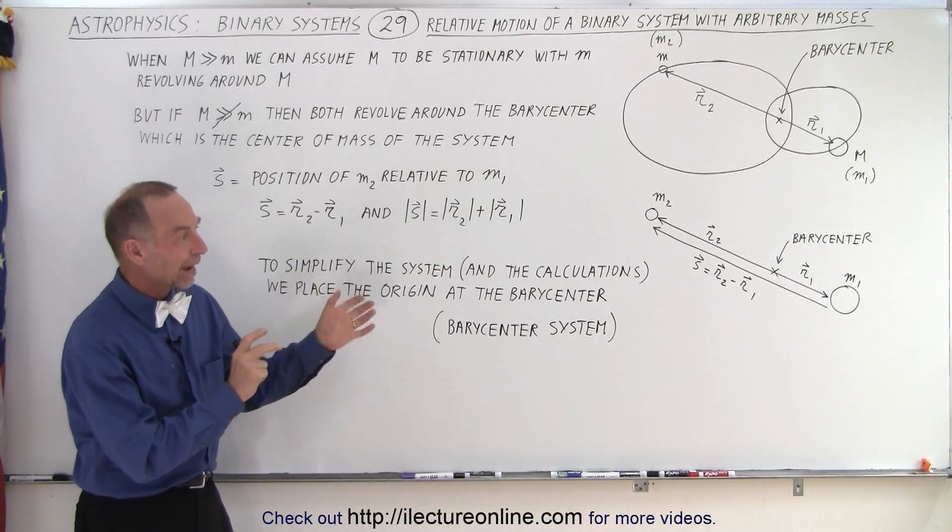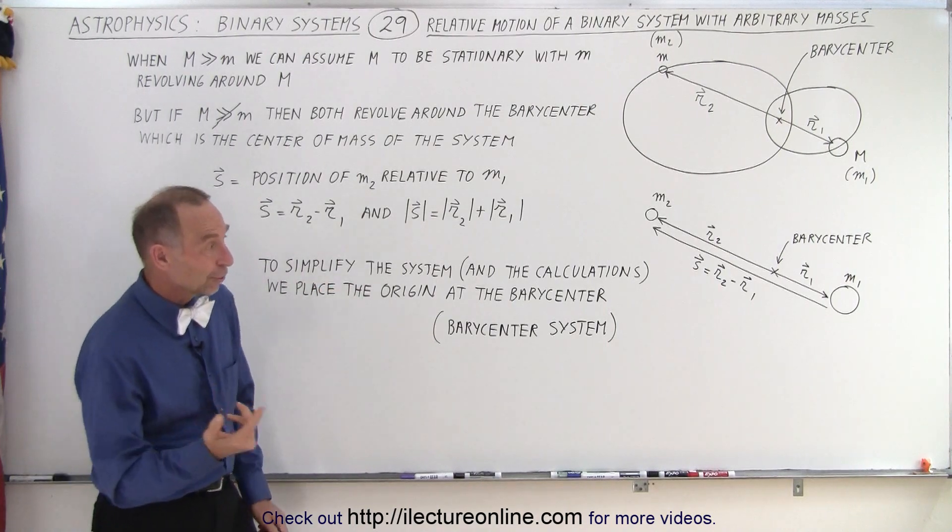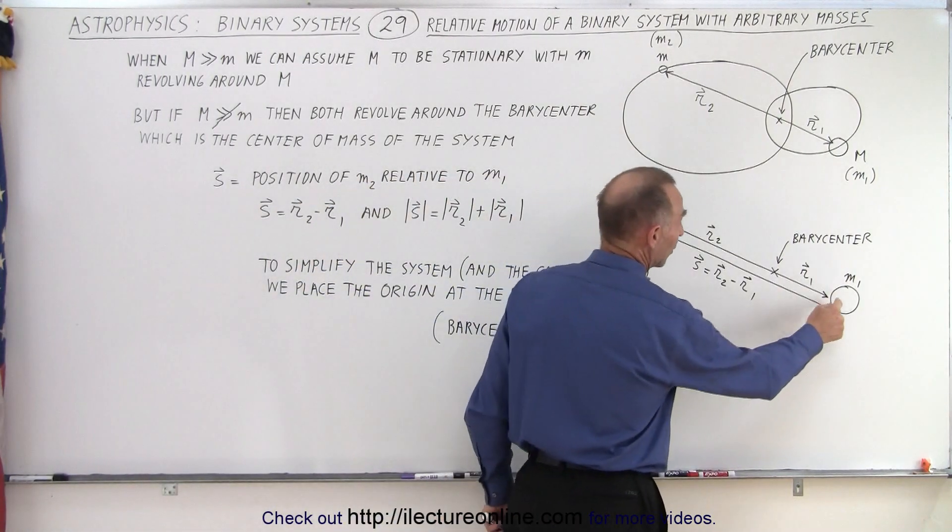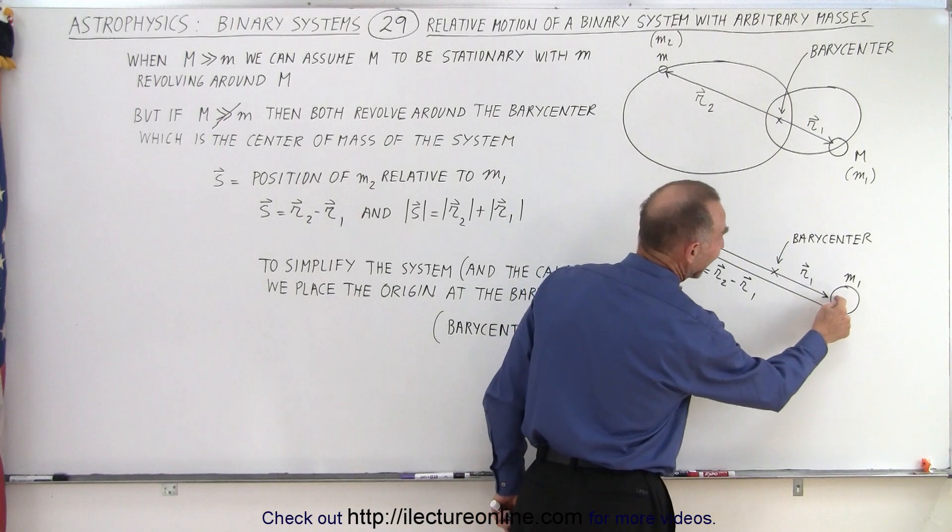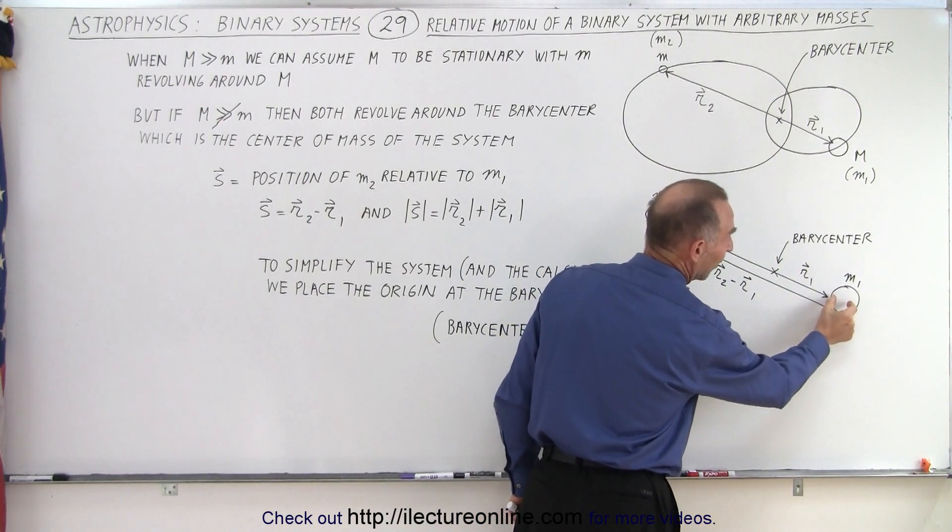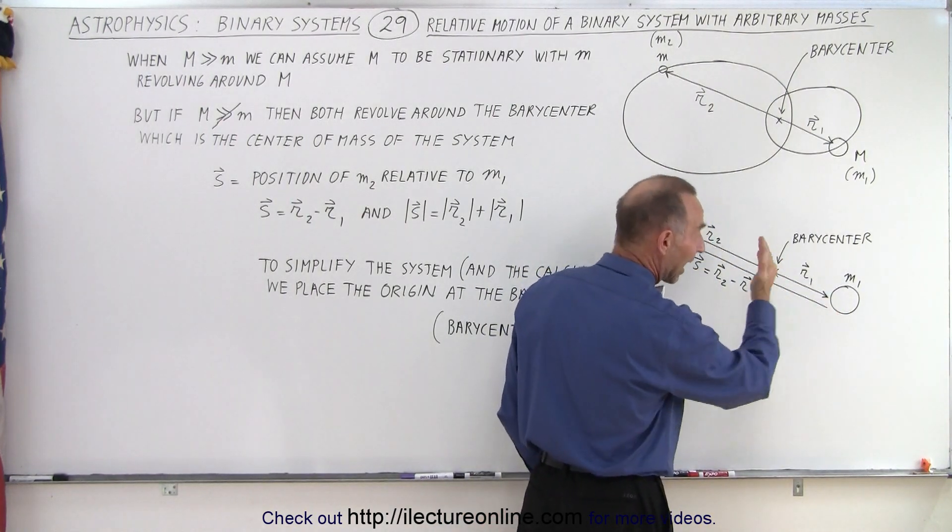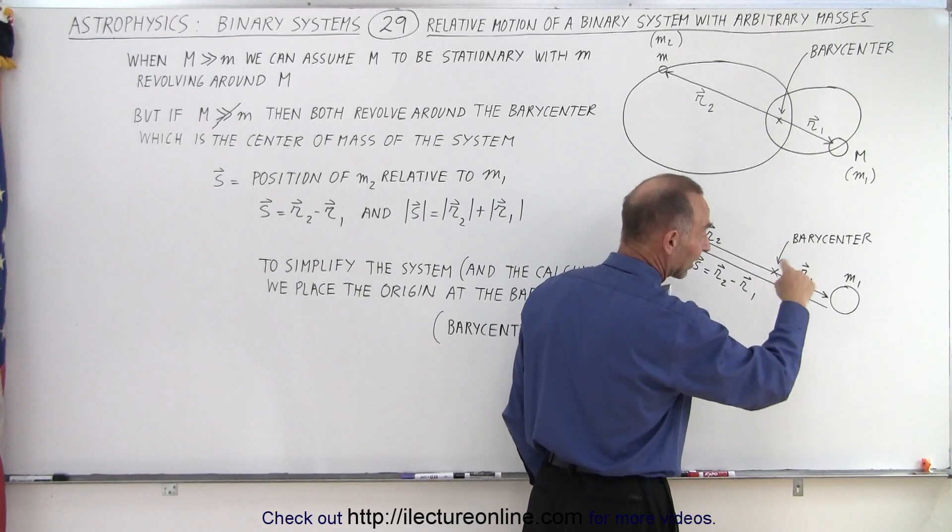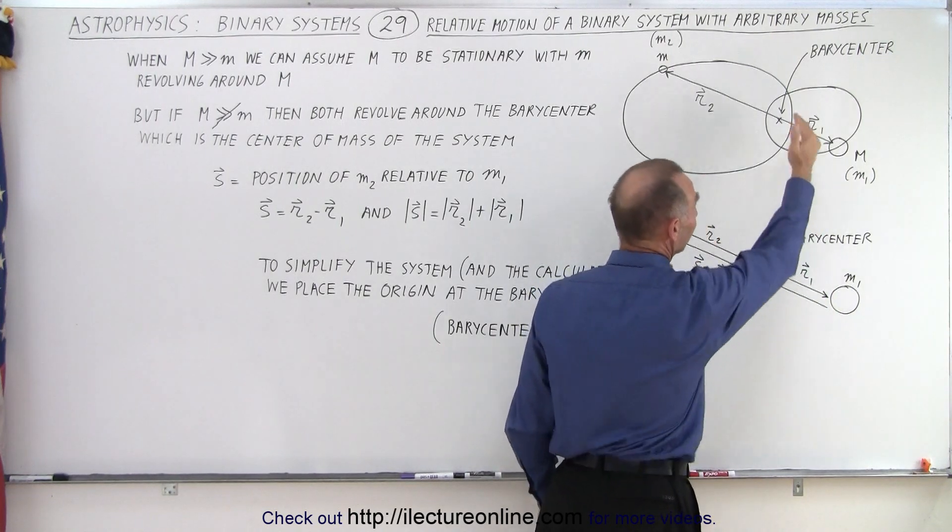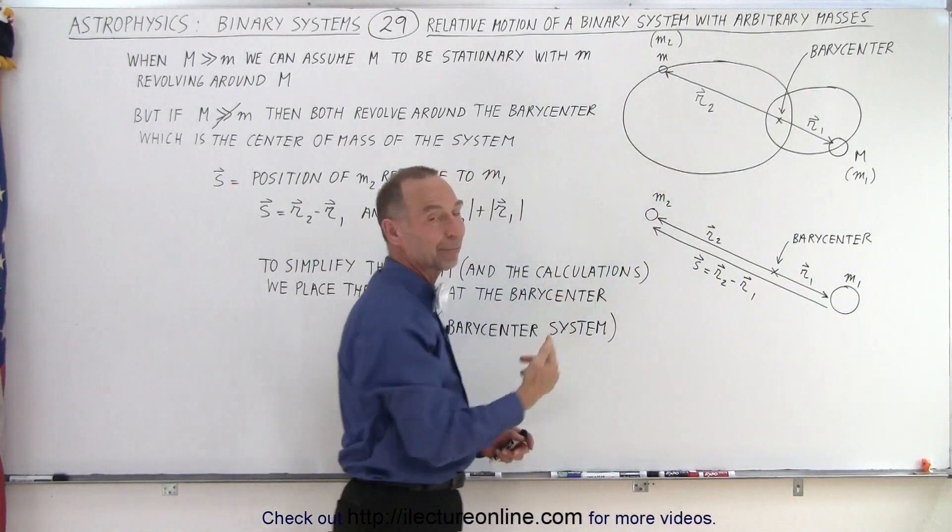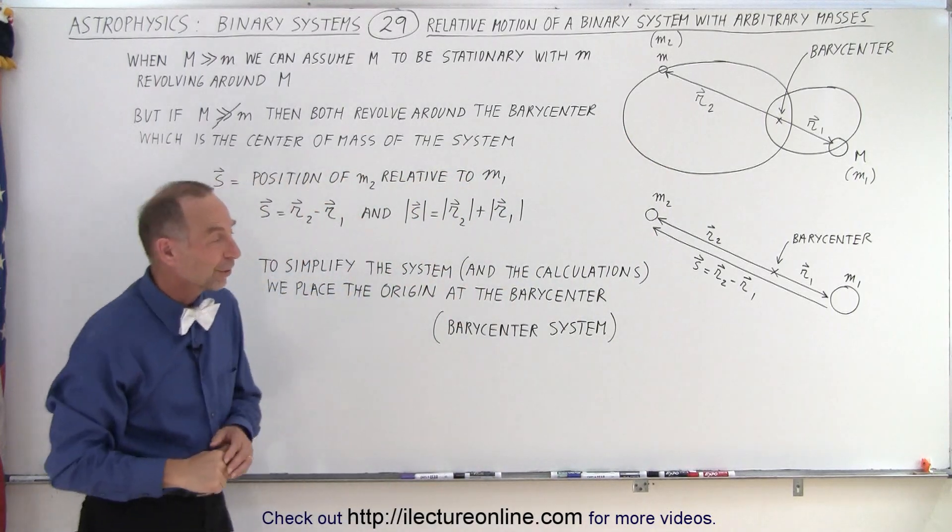It turns out that the barycenter of the Earth-moon system is actually inside the Earth, but some distance away from the center, so that the Earth actually, in essence, goes around like this. So the path around the sun is kind of like snakes around like that because of the orbit of the moon. So it does have that effect.